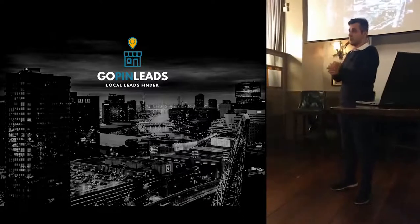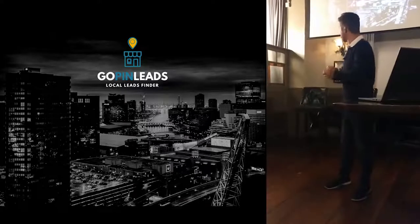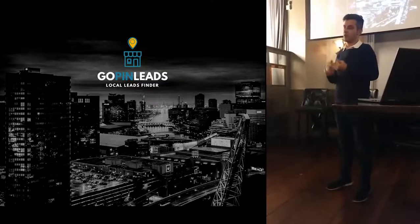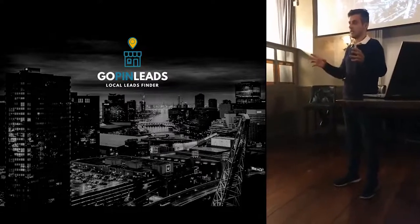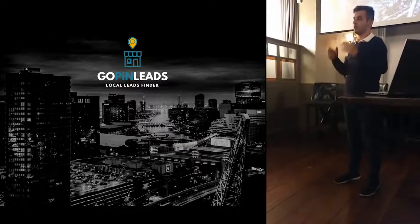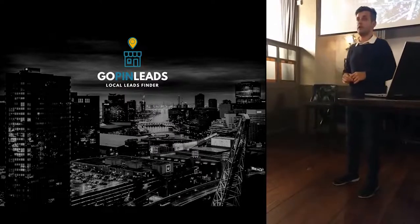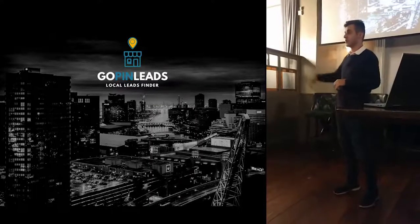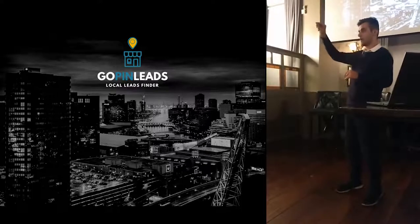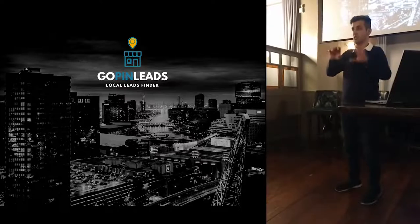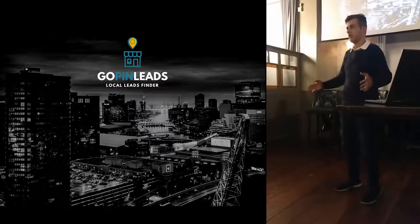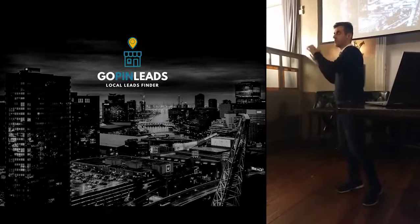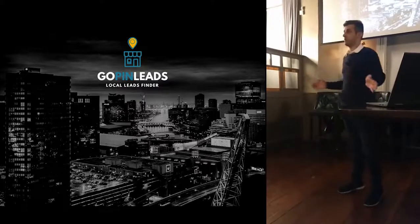This is a shameless plug — it's called Gopin Leads, which we built and launched last month. It helps you find email addresses, social media links, phone numbers, and addresses of any business and their employees. Say you're looking for all designers in New York City, salons in London, or Thai restaurants in Singapore — you go to Google Maps, install a Chrome extension plug-in, click on the search you want, and it gives you an Excel sheet with all the businesses, their phone numbers, addresses, email addresses, LinkedIn, Facebook, Twitter, and YouTube.